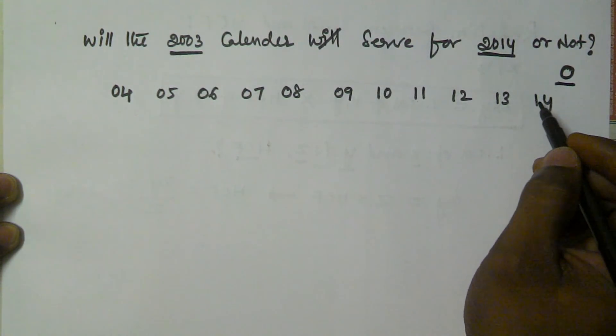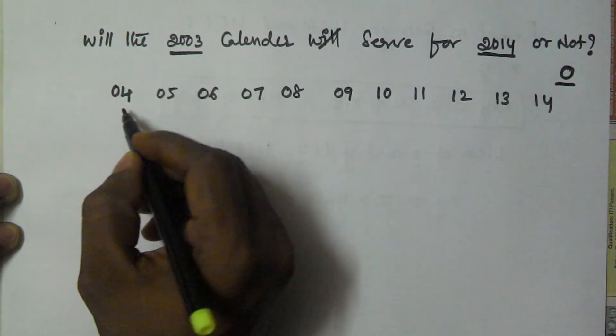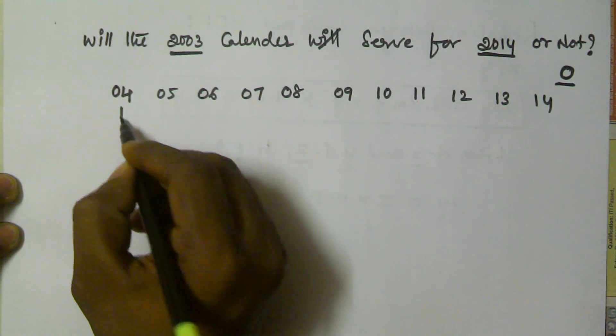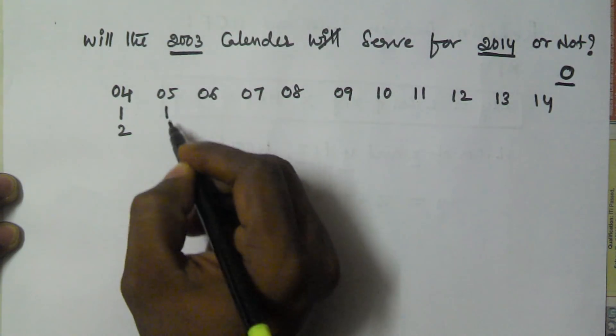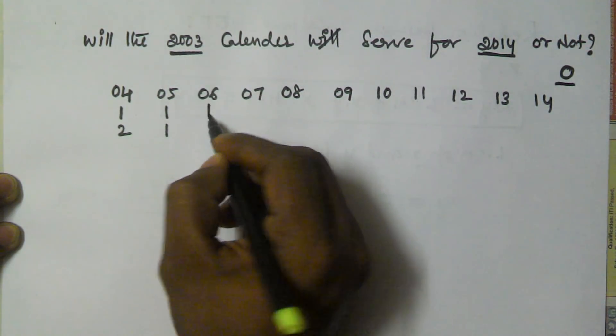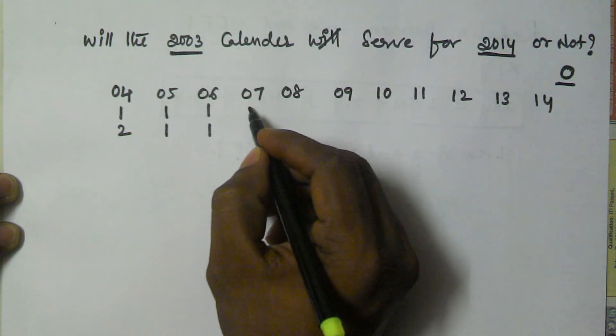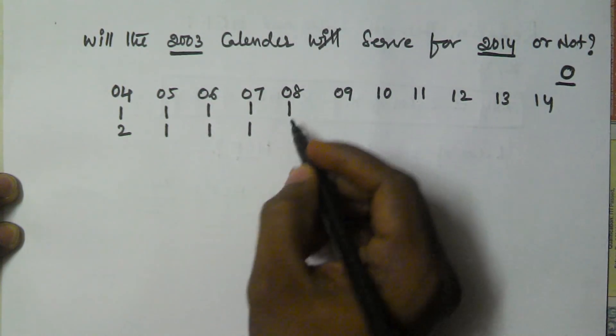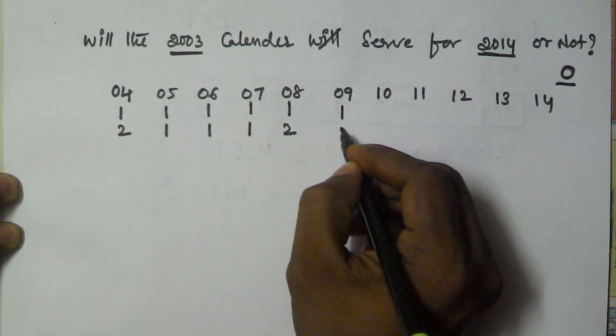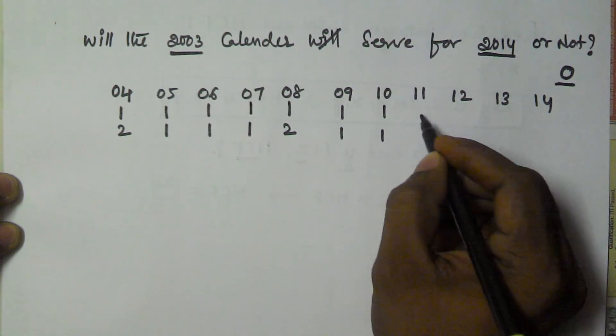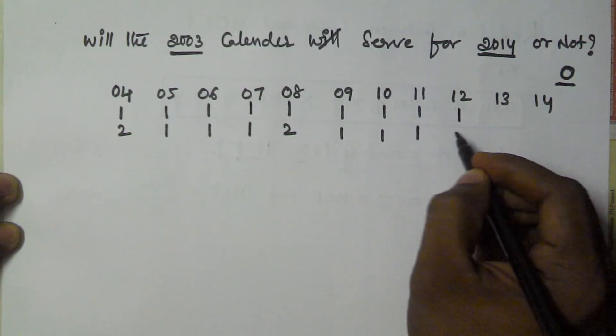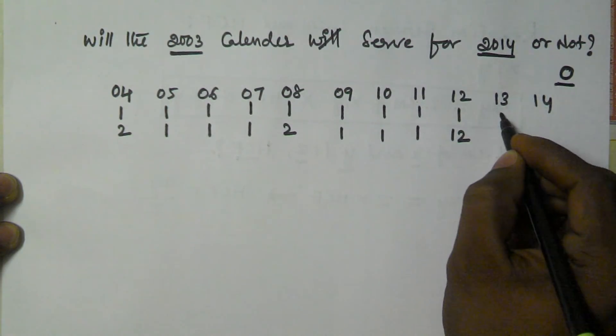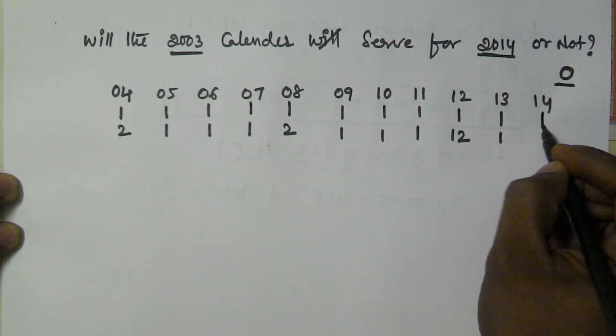2004 is a leap year, so it contains two odd days. 2005 is a non-leap year, it contains one odd day. 2006 is a non-leap year, one odd day. This contains one odd day, and 2008 is a leap year, it contains two odd days. Again this contains 1, 1, 1, and 2012 is a leap year, it contains two odd days. This is a non-leap year: 1, and 1.